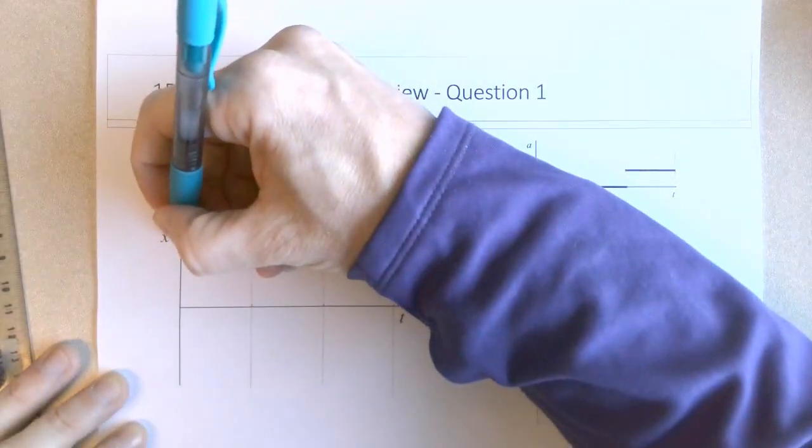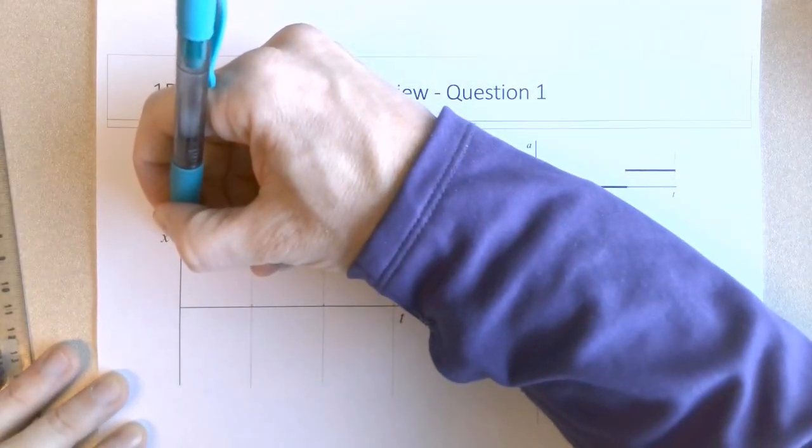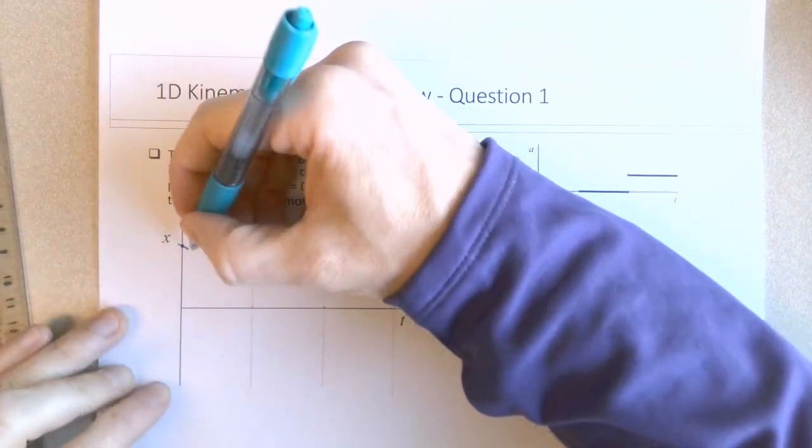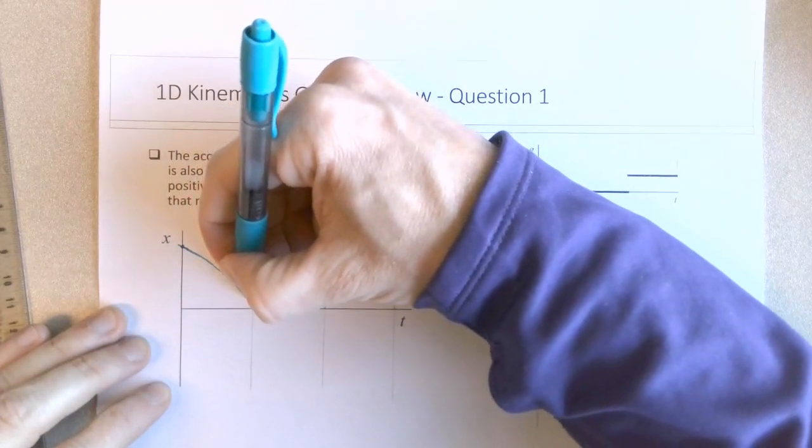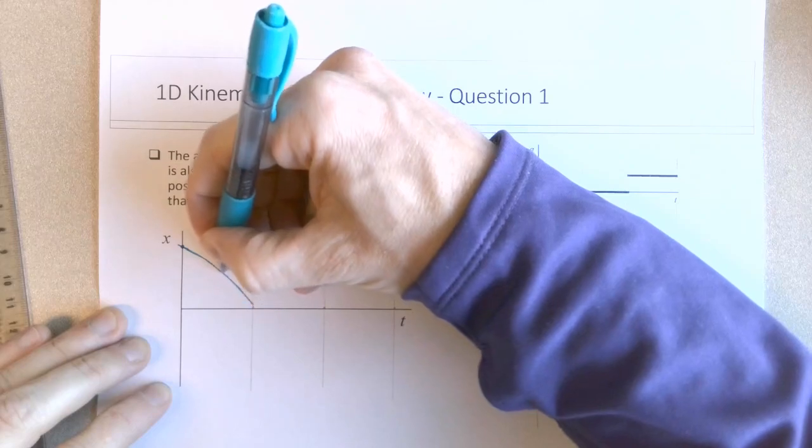So a negative velocity means that the tangent line to this particular point must be negative, and then it gets more and more negative. So we should have sort of a downward sloping parabolic shape until we get to this particular grid line.